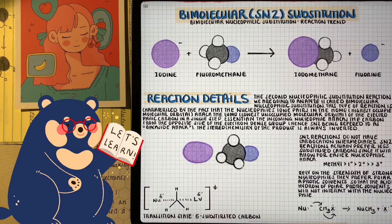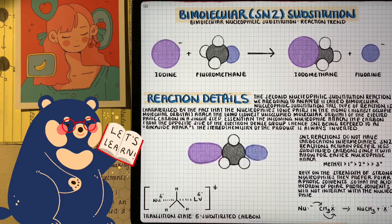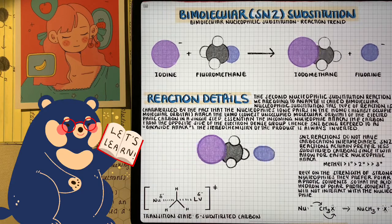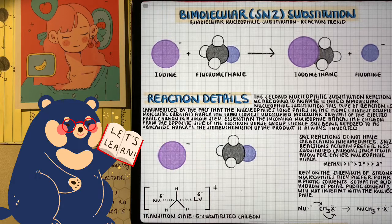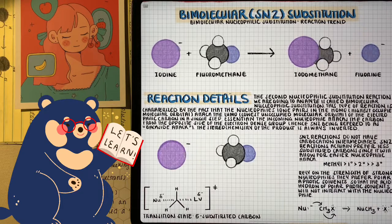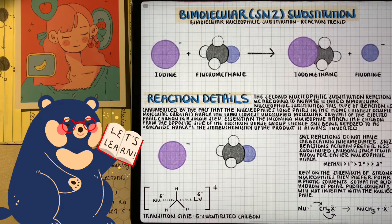When it comes to stereoselectivity for SN2 reactions, we've got to remember with SN1, we had a carbocation formation. With SN2, we don't. Because a nucleophile attacks from the opposite side that the leaving group leaves, our product is always going to have inverted stereochemistry.